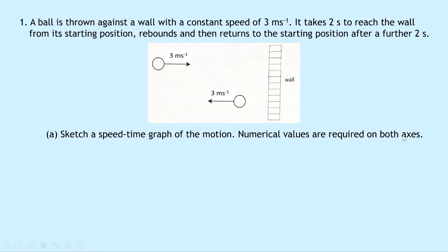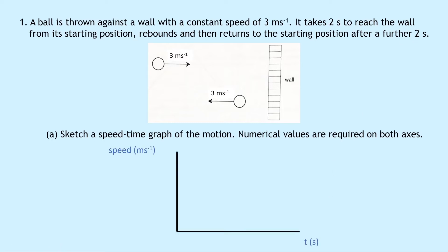Numerical values are required on both axes. The question tells us that the ball is travelling at a constant speed, so we're going to have a graph that shows a constant speed, and it's happening over 4 seconds in total. Drawing the axes and labels — speed in metres per second and time in seconds — we draw a straight horizontal line for our constant speed, and put in our numerical values: 3 for the constant speed and 4 for the total time.